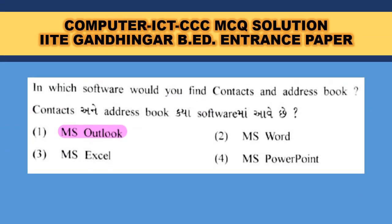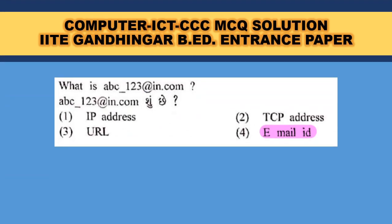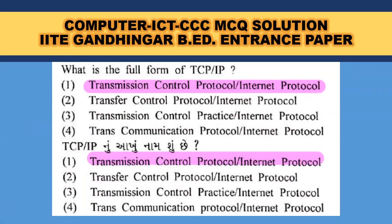In which software would you find contacts and an address book? MS Outlook — it is an email management software. What is abc_123@in.com? It is an email address. What is the full form of TCP/IP? TCP means Transmission Control Protocol / Internet Protocol — A is the correct answer.